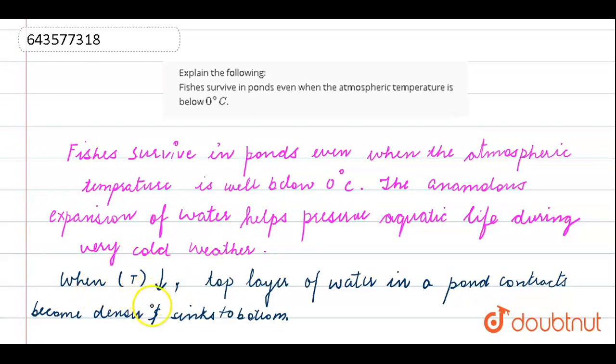How? When the temperature falls down, the top layer of water in a pond contracts, becomes denser and sinks to the bottom. This is how fishes survive in temperatures below 0 degrees Celsius.